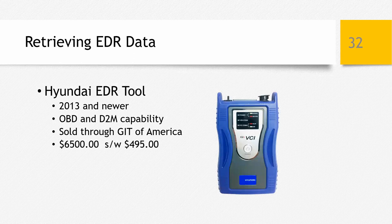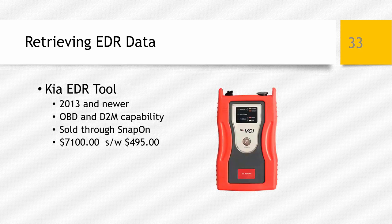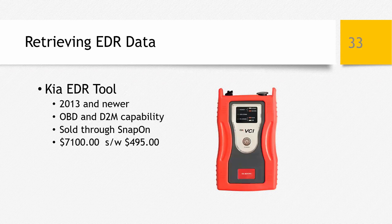The Hyundai EDR tool supports 2013 and newer Hyundai vehicles only. It has both OBD capability and direct-to-module capability. The Hyundai tool is sold through a company called GIT of America and sells for about $6,500 with an annual software fee of around $500. The Kia EDR tool also supports 2013 and newer vehicles only, with both OBD and direct-to-module download capability. The Kia tool is sold through Snap-on for about $7,100 with an annual software fee of around $500 per year. Those are the currently available EDR retrieval tools for passenger cars, light trucks, and SUVs.